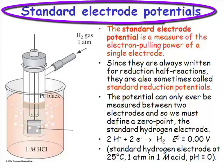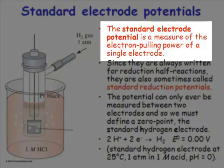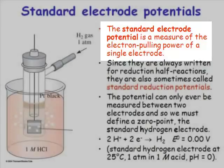What is a standard electrode potential? The standard electrode potential can be viewed as the pulling power of an electrode for an electron.